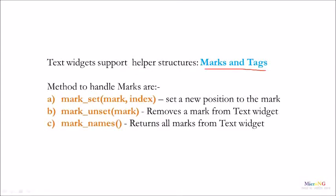There are some side methods for marks. There are three important methods for the mark: mark_set, mark_unset, and mark_names. mark_set is used to set a new position to the mark, which takes two parameters: the mark name and the index where the mark needs to be placed. The second method is mark_unset, which is used to remove a mark from the Text widget. We need to mention the mark that needs to be removed using mark_unset.